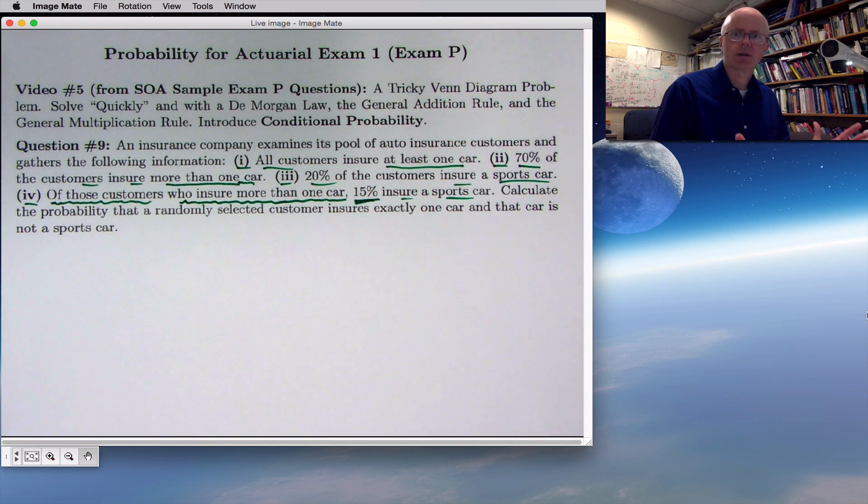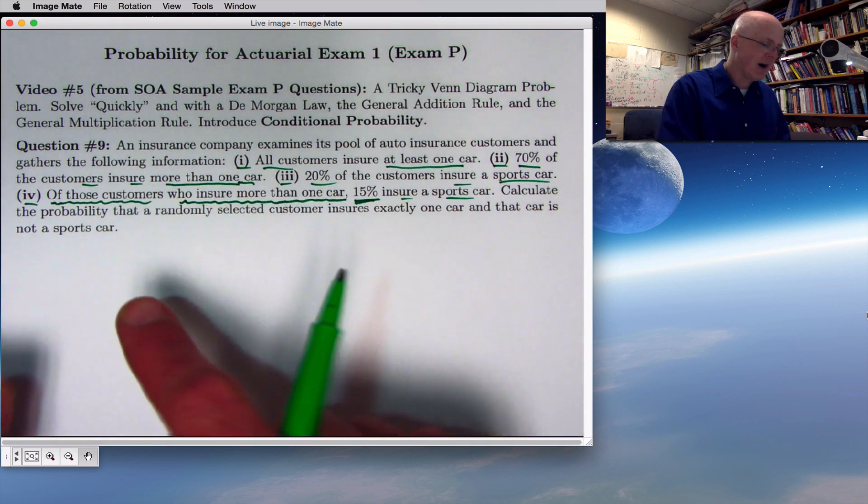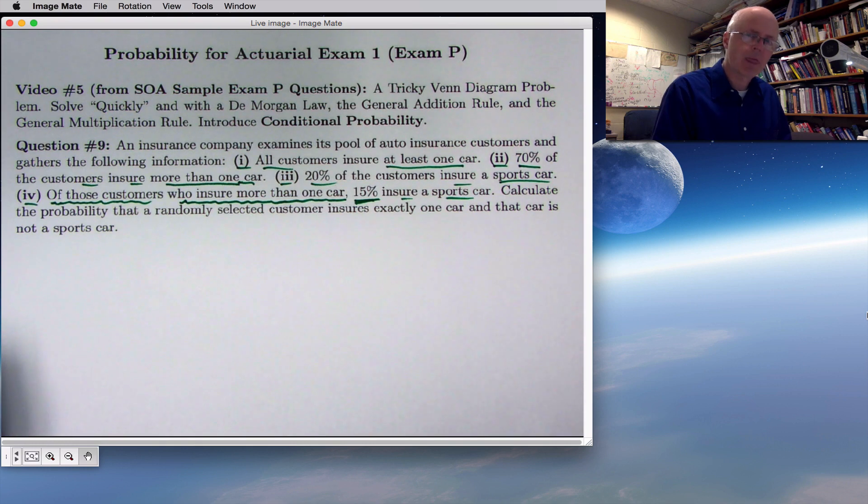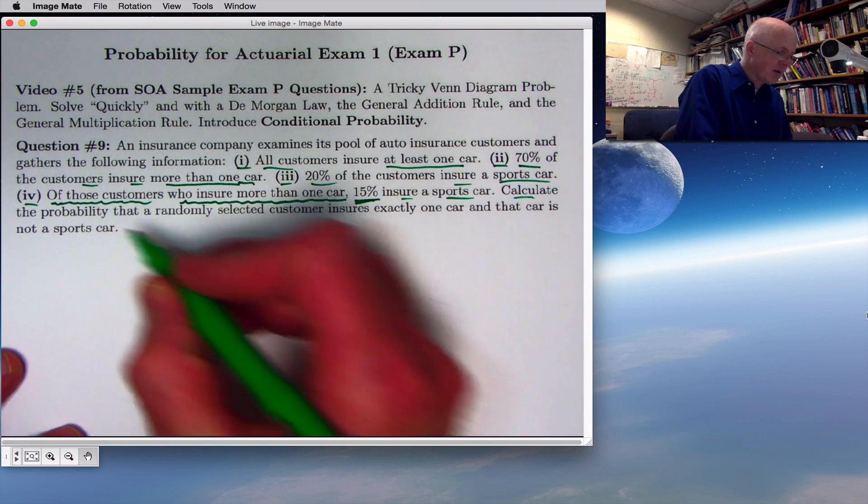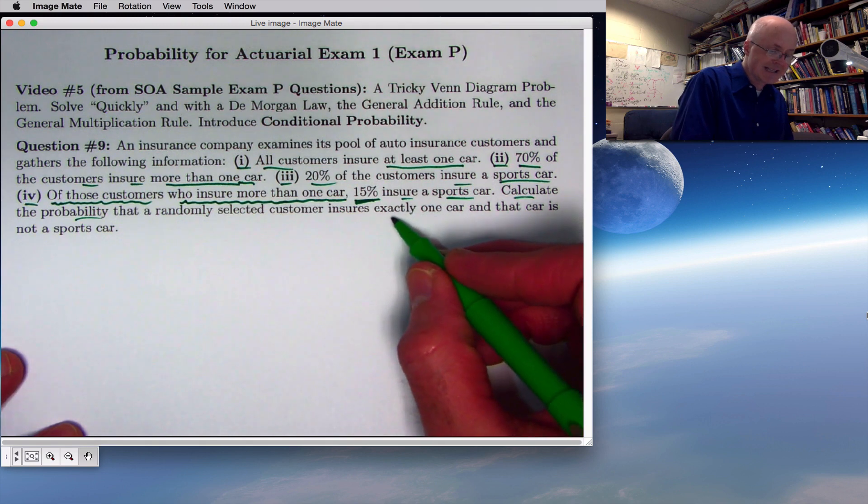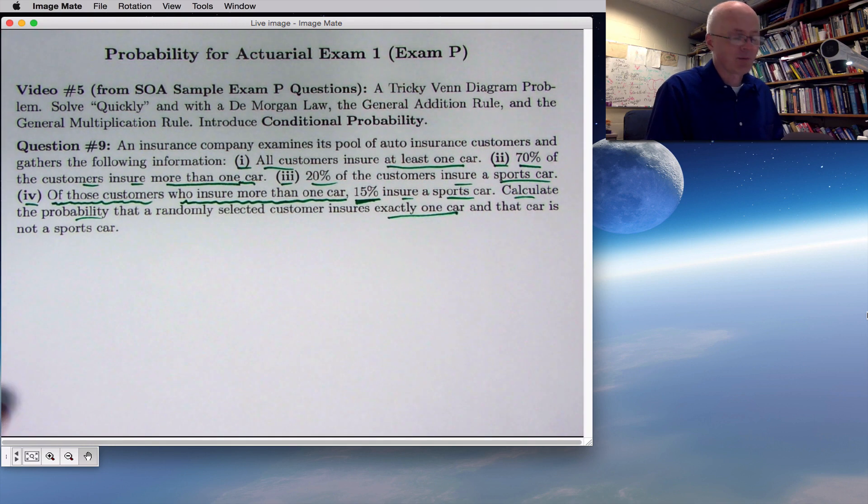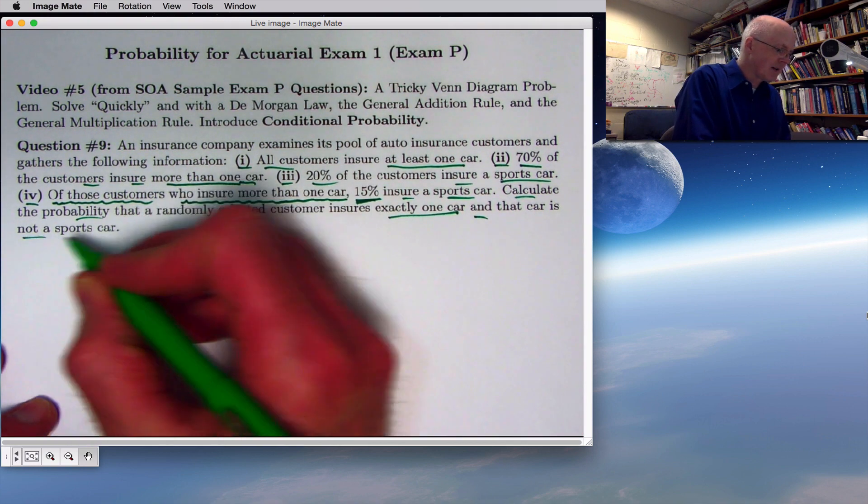Just imagine that you've got a thousand customers here. 70% of them insure more than one car, 700. So that would mean 300 insure exactly one car. 20% of them insure a sports car, 20% of a thousand is 200. And then four, of those customers who insure more than one car, of those 700, 15% of them insure a sports car. 15% of 700 is 105. If you think that way, think in terms of numbers, it helps you to start to get your mind around the problem. But we don't know that we have exactly a thousand customers. We have to work with these percentages instead. We want to calculate the probability that a randomly selected customer insures exactly one car and that that car is not a sports car.